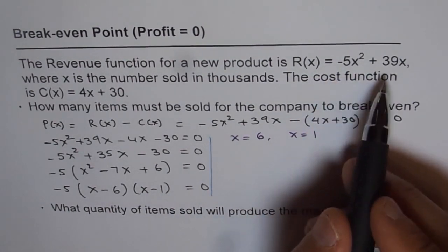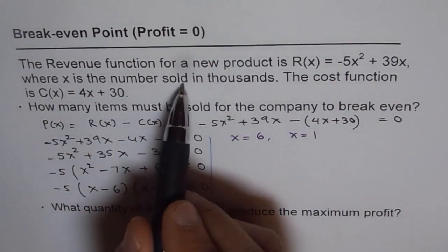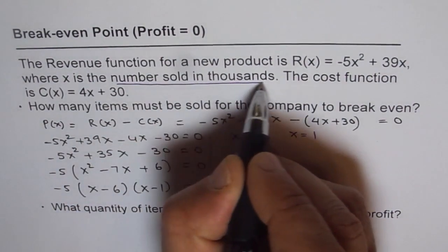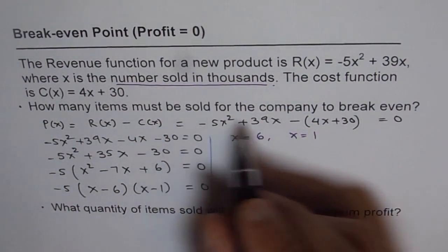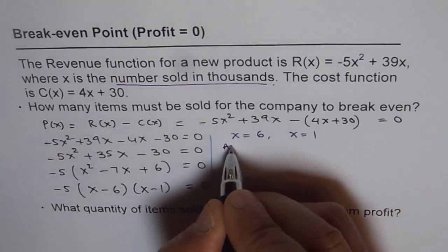Now, if you read the question properly, it says where x is number sold in thousands. Therefore, in your answer, you should write that the number of items sold are, so we write down our answer here is: